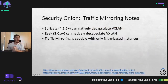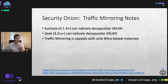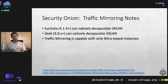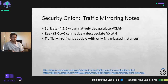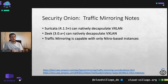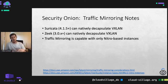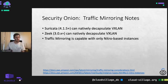Some notes on traffic mirroring with AWS: Suricata 4.1.5 and above can natively decapsulate VXLAN traffic, so it can inspect that and generate alerts accordingly. Zeek 3.0.x and up can also natively decapsulate VXLAN. Traffic mirroring is only capable with Nitro-based instances — you cannot mirror traffic from just any instance. That's something to be aware of if you're building out your cloud infrastructure or considering a reorganization.